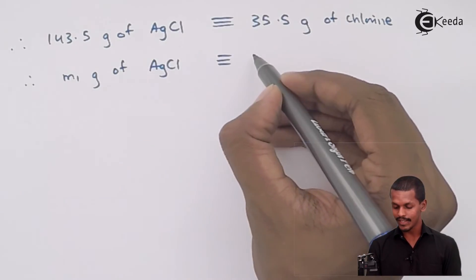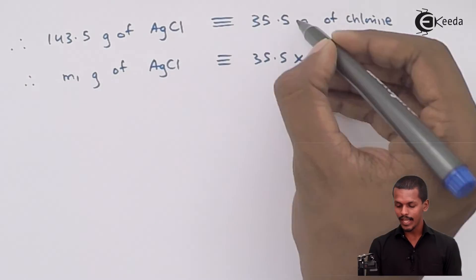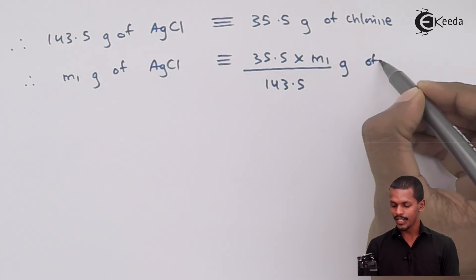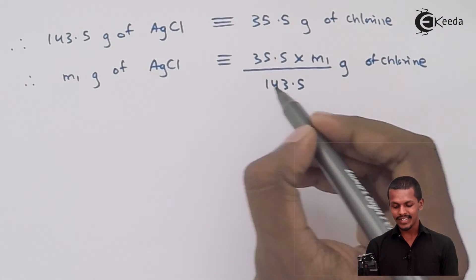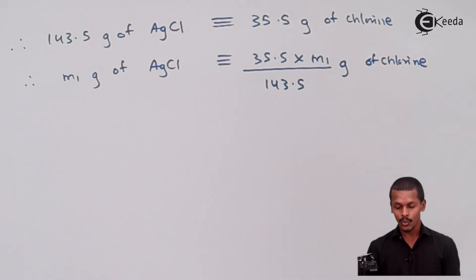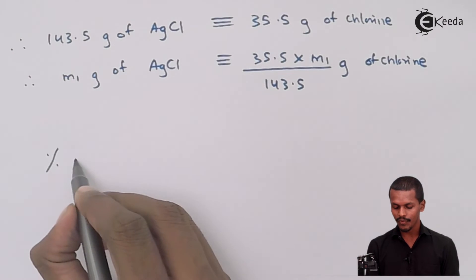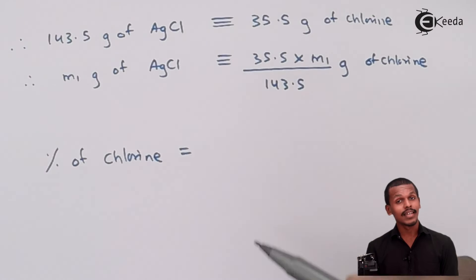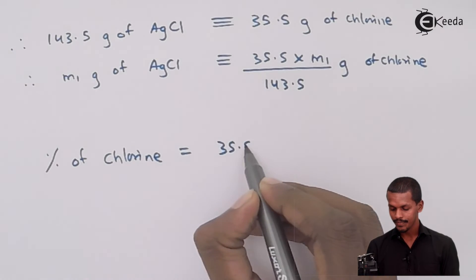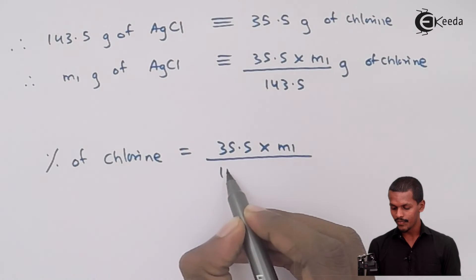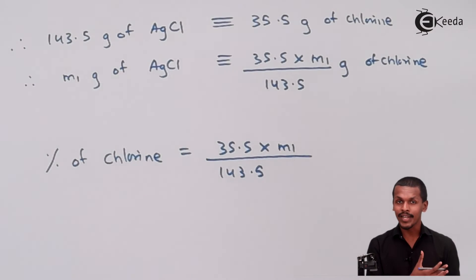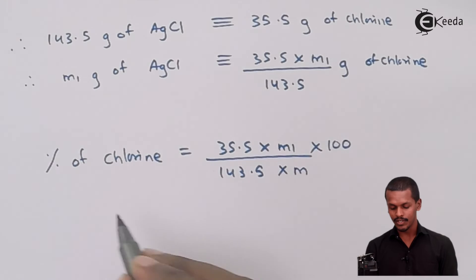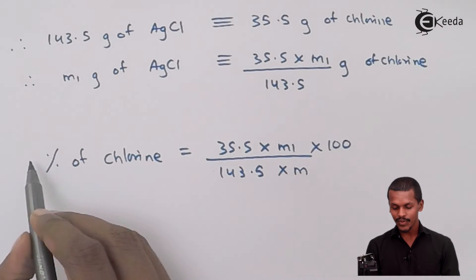To determine the percentage of chlorine, the formula is: % Chlorine = (35.5 × M1) / (143.5 × M) × 100, where M1 is the mass of AgCl obtained and M is the mass of the organic compound. This is how we determine the percentage of chlorine present in the organic compound.